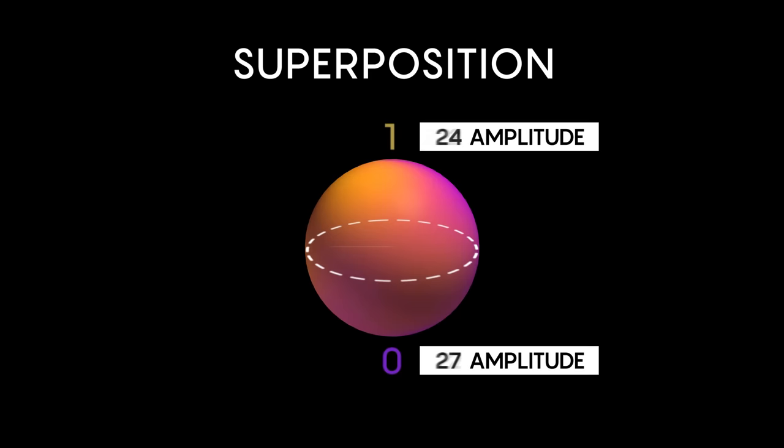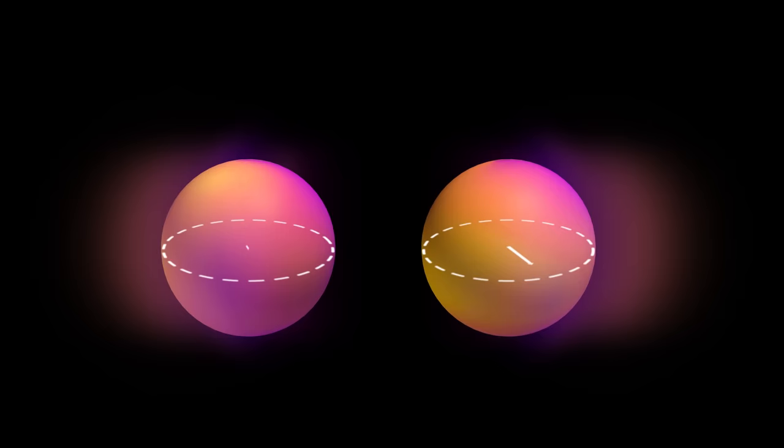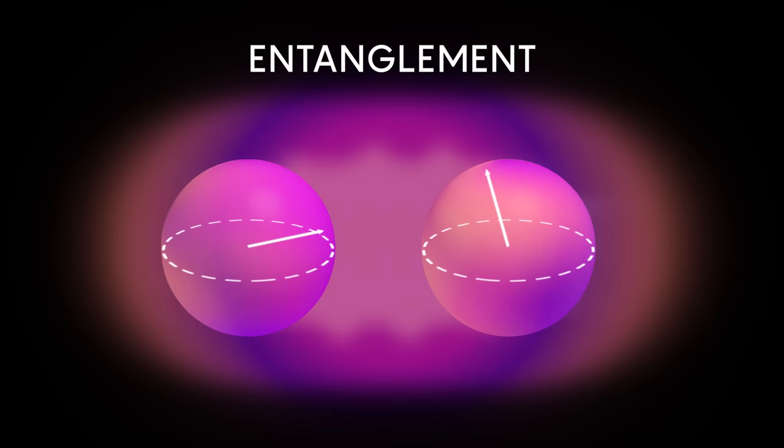Superposition is the reason why it takes a vast number of classical bits to describe the quantum state of even a tiny number of particles. When two or more qubits are in this closed state of superposition, they relate to one another through the phenomenon of entanglement. This means that their final outcomes, when we measure them, are mathematically related.